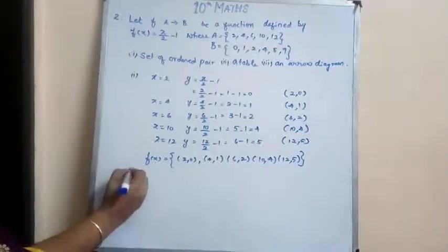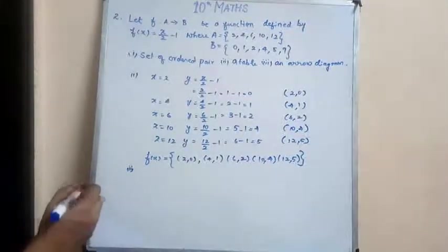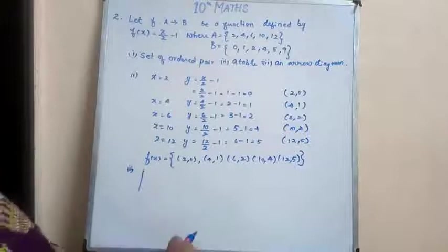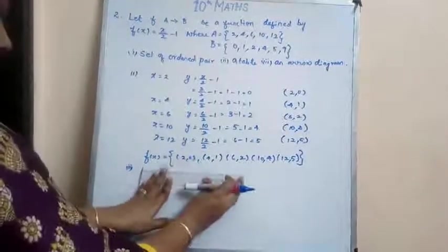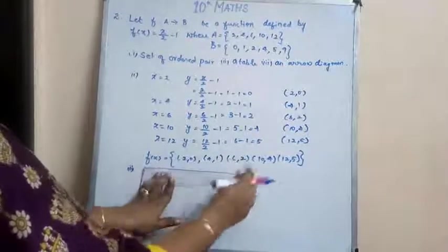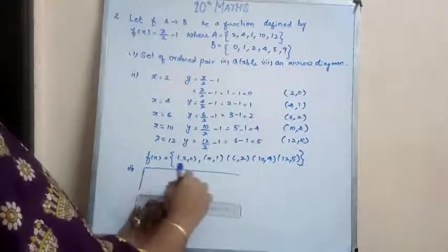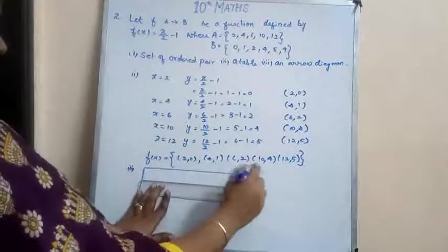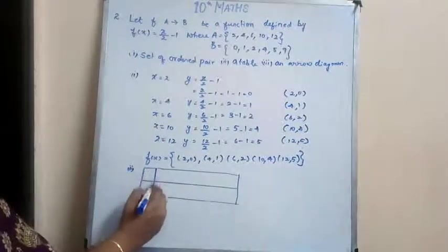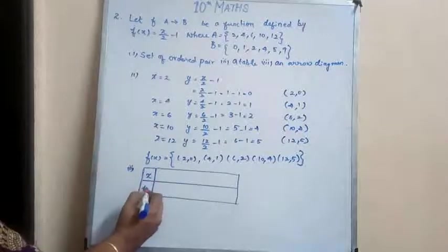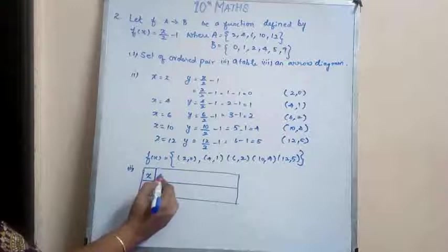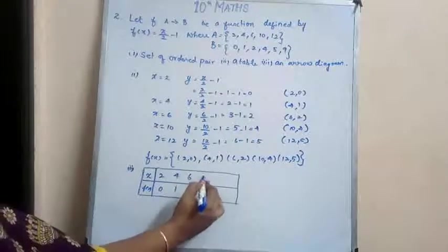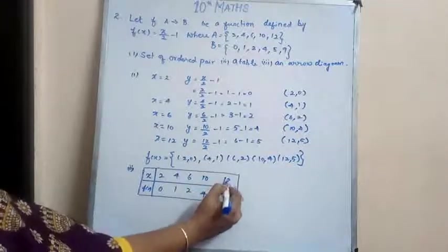So the next one is, you have to represent it in a table. So this is your x and this is f(x). So for 2 you get 0, 4 you get 1, 6 you get 2, 10 you get 4, and 12 you get 5.